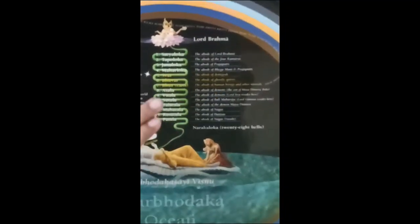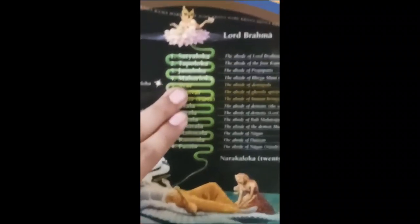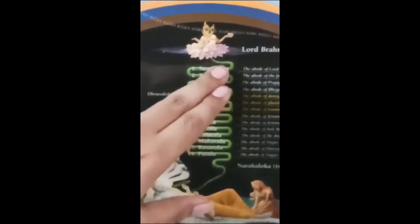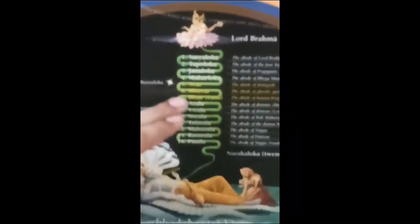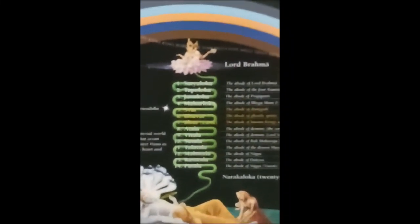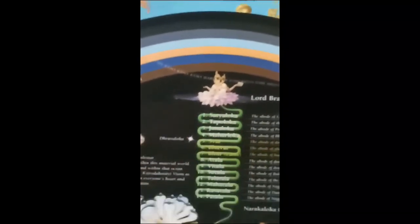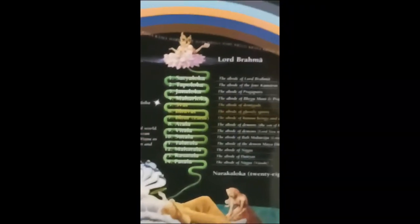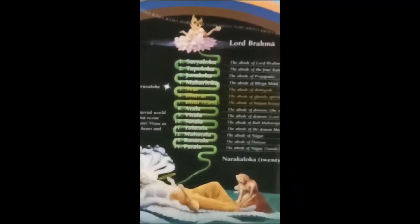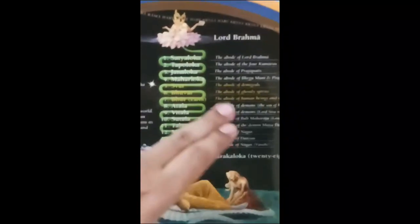Above Bhur Loka there is Bhuvar Loka, then Swarga Loka, then Mahar Loka, then Jana Loka, then Tapa Loka, and at the very top is Satya Loka — the planetary system where Lord Brahma resides. Bhur Loka, the earthly planetary system, is the middle one.